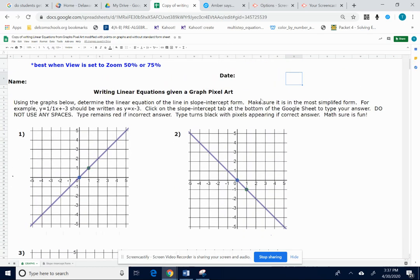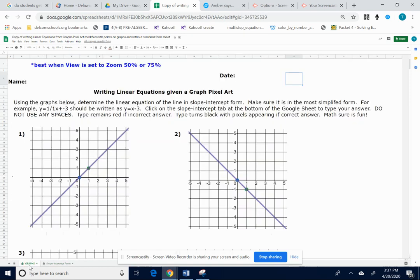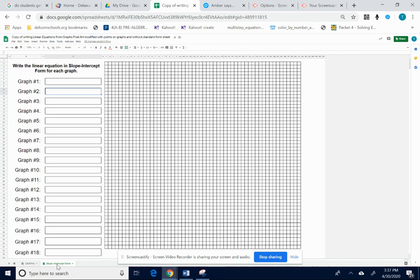If you also notice, on the bottom right-hand side of your screen, there's two pages to this document. The page you're on says graphs. If you click on where it says slope intercept form, that's going to be where you put your answers, and you can go back and forth.